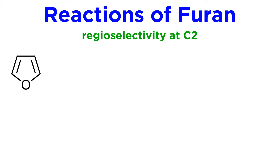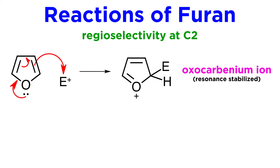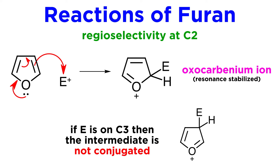The regioselectivity here can be explained as follows. If we push a lone pair from oxygen around the ring to pick up the electrophile, we are left with a conjugated cationic species called an oxocarbenium ion. This would not occur if the electrophile ended up on carbon 3, so resonance is the primary factor guiding the regioselectivity here.